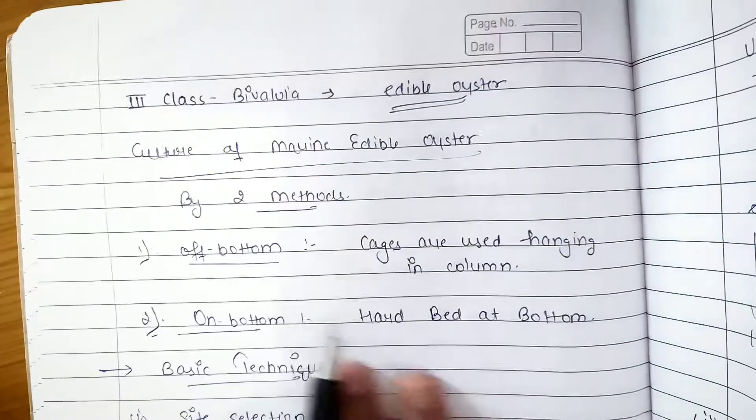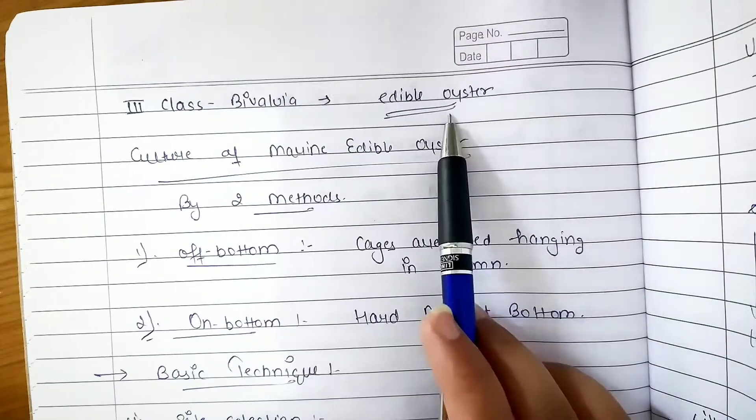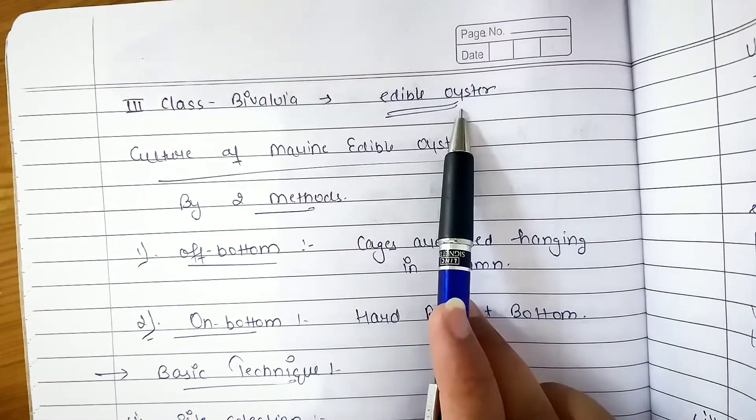And our third class comes, that is the Class Bivalvia. This is our edible oyster. Our focus is on the edible oyster.